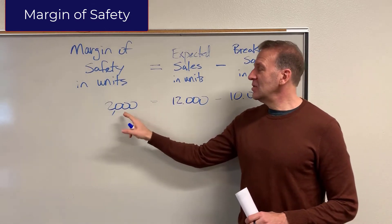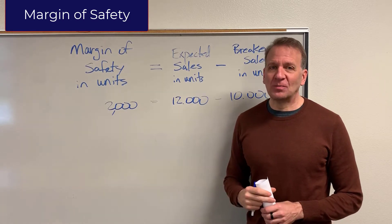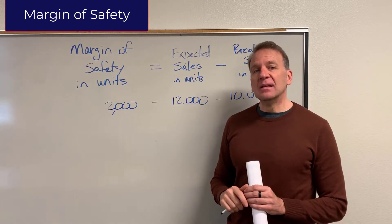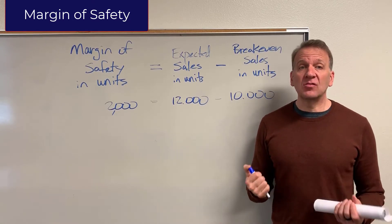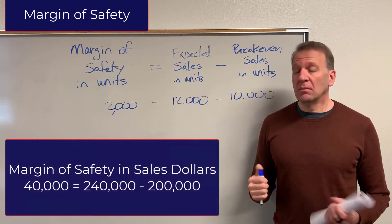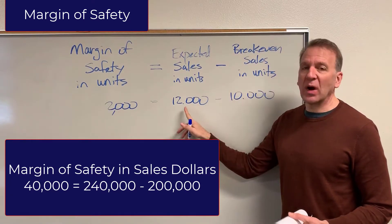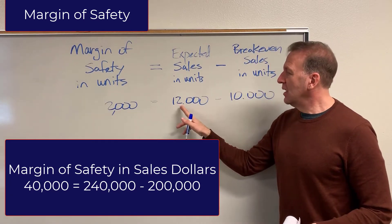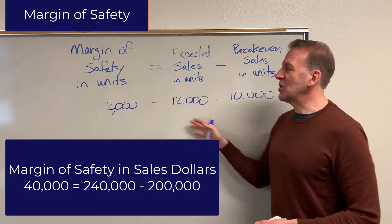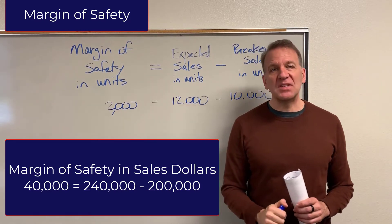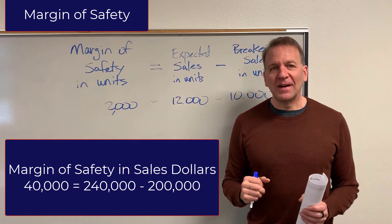But if we drop 2,001, then we'll have a loss. So that's margin of safety. Sometimes problems ask you to calculate margin of safety in sales dollars. All you need to do is multiply by the sales price. So if the sales price were $20 per soccer ball, you take expected sales times $20 and breakeven times $20, subtract, and you get your margin of safety in sales dollars.